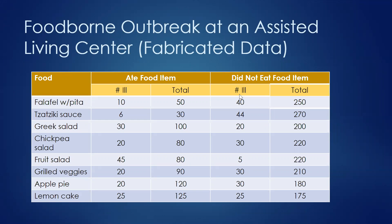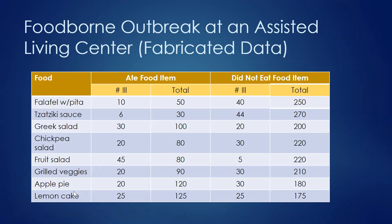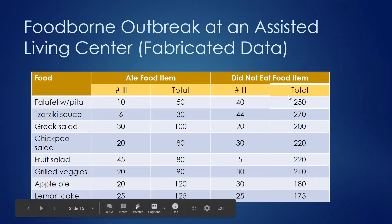Let's imagine we have an assisted living facility with a shared dining room. This is the menu for a particular dinner that occurred there, and we saw an outbreak of foodborne illness afterwards. We're trying to figure out which food item made people sick. We make a line listing of all the food items that were available — it's helpful in a situation like this where you might have a record of the menu — and then we create four columns.